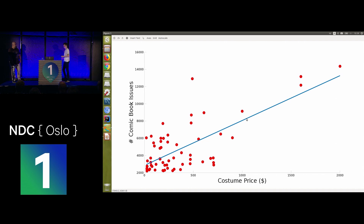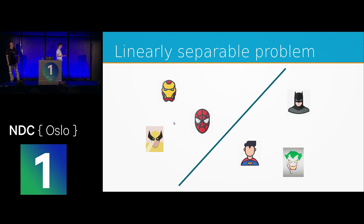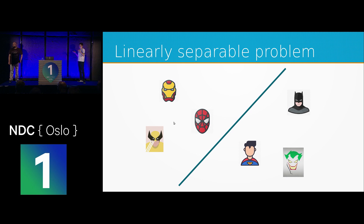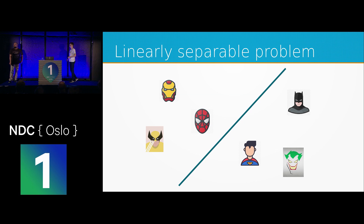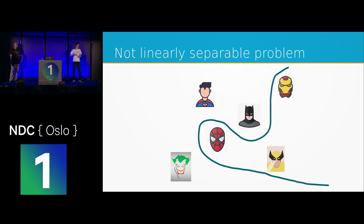Linear regression is cool, but it's linear. If you'd like to separate Marvel superheroes from DC superheroes — two different universes — in an ideal world you could use linear regression and just put a straight line between them. But in real life, data is much more complex and mixed. You need to use nonlinear methods, and that's where neural networks come to the rescue.